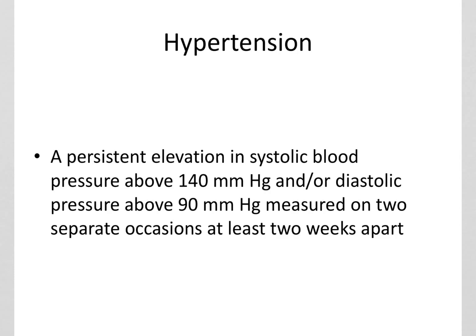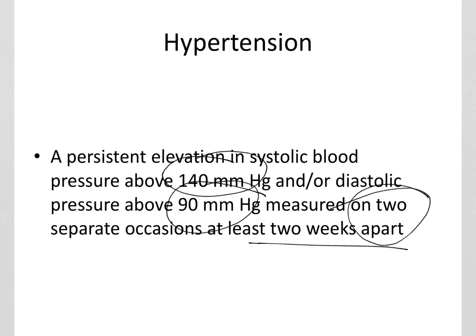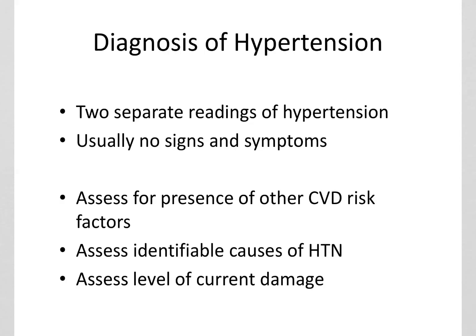Hypertension is a diagnosis where someone has a systolic blood pressure above 140 and a diastolic above 90. The key is it has to be on two separate occasions, at least two weeks apart. It can't just be one day where the person is nervous or something stressful is going on — there has to be a pattern.